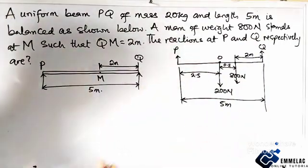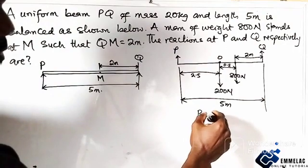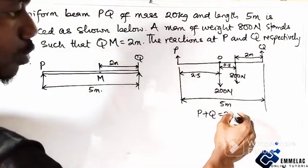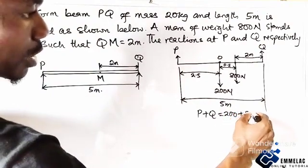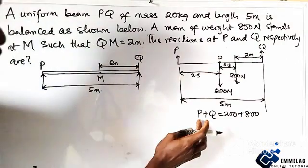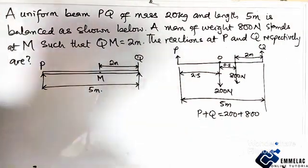Which means that P plus Q equals the downward force, which is 200 plus 800. Alright? Now the question is what is the value of P and Q.